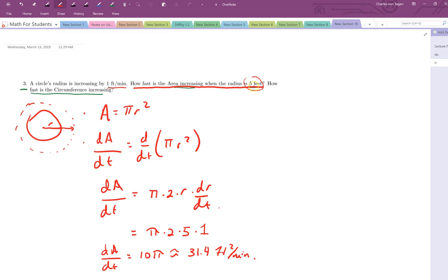So specifically, when the radius is 5 feet, the area is increasing by 31.4 feet squared per minute. Now as the radius gets even larger, the rate of change of the area will continue to increase because of this r factor here.